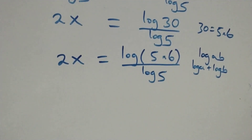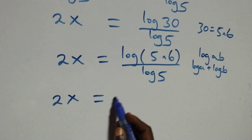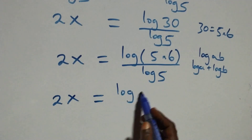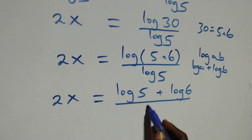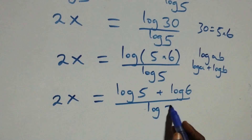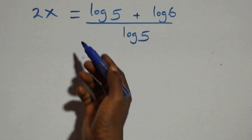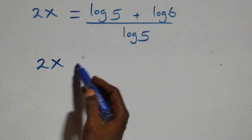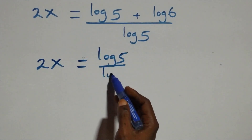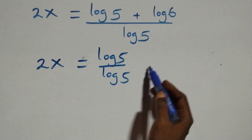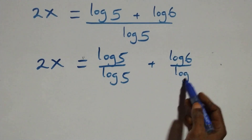Then here this follows: 2x equals to log 5 plus log 6, all over log 5. From here, log 5 cancels with itself. We separate this into two fractions: 2x equals to log 5 over log 5 plus log 6 over log 5.